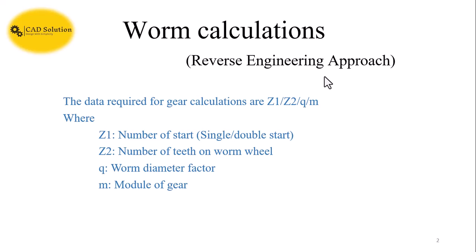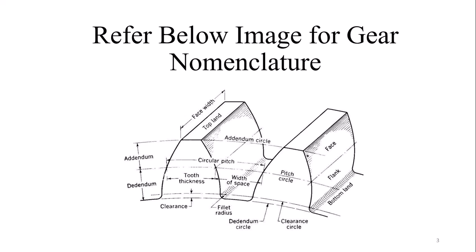Q is the worm diameter factor, M is the module of the gear. Refer to the below image for the gear nomenclature. It will help you understand the gear terminology as well.